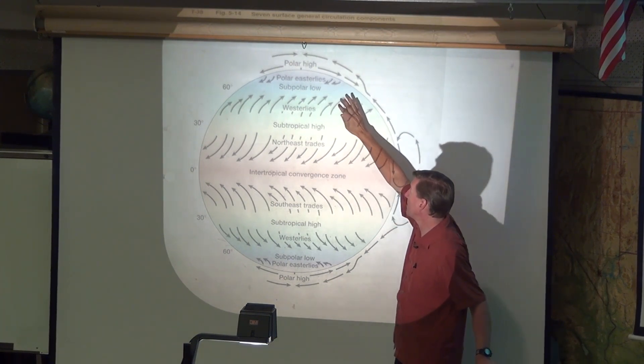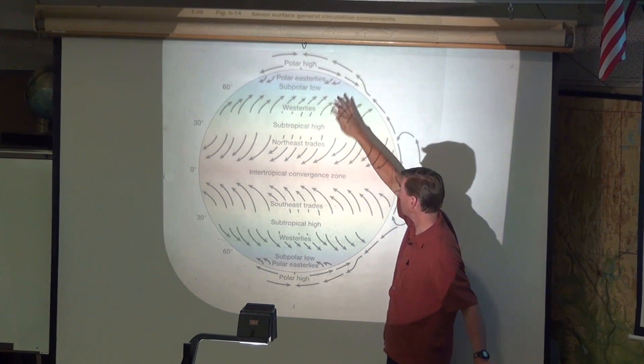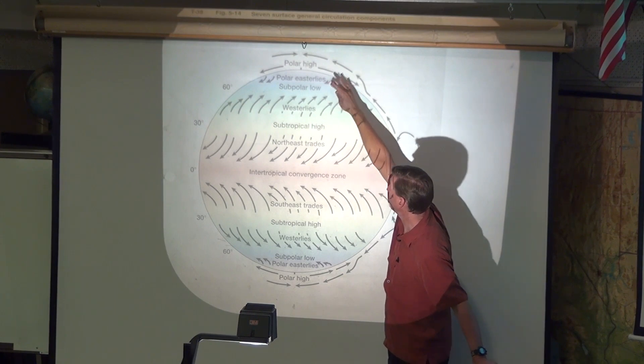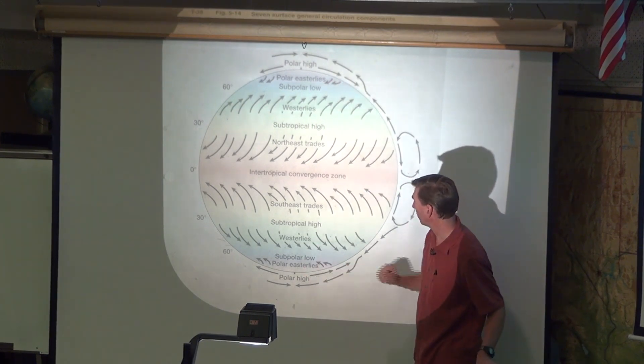Now we'll get to this next time. But the subpolar lows. Notice it is a low. And so again, it's going from a high to a low. It's spinning to the right because the Coriolis force. And then we'll get to these poles here next time.